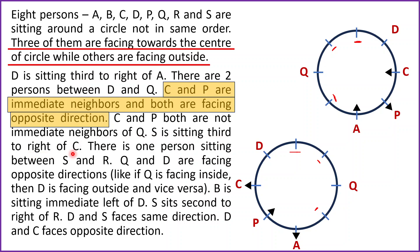S is sitting third to the right of C. In Case 1, C is facing inside the center, so this side is the right side of C. S is third to the right — count one, two, three — S will be placed here in Case 1. In Case 2, C is facing outside the center, so this side is the right side of C — one, two, three — S will be placed here in Case 2. If you have any doubts, please comment below.